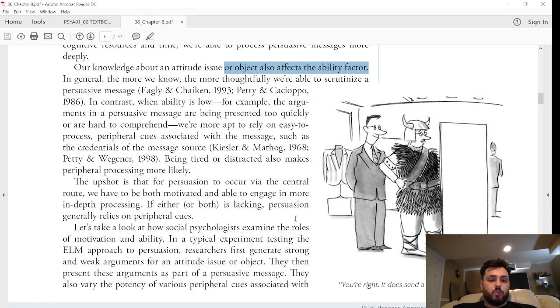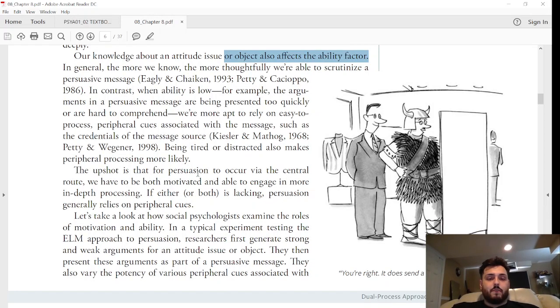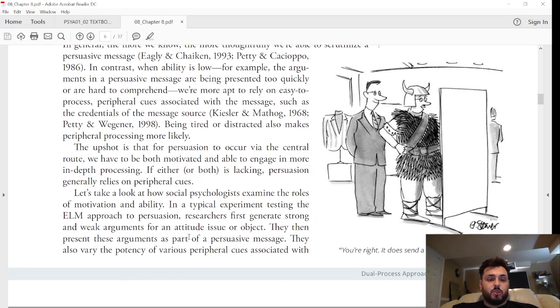Being tired or distracted also makes peripheral processing more likely. If I'm tired, for example, or if you're watching this and you're tired of reading this text or learning about the subject, you aren't going to keep listening. You're going to keep this in the back as white noise, and you may not be interested in learning about psychology or social psychology. The upshot is that for persuasion to occur via the central route, we have to be both motivated and able to engage in more in-depth processing. If either or both is lacking, persuasion generally relies on peripheral cues.